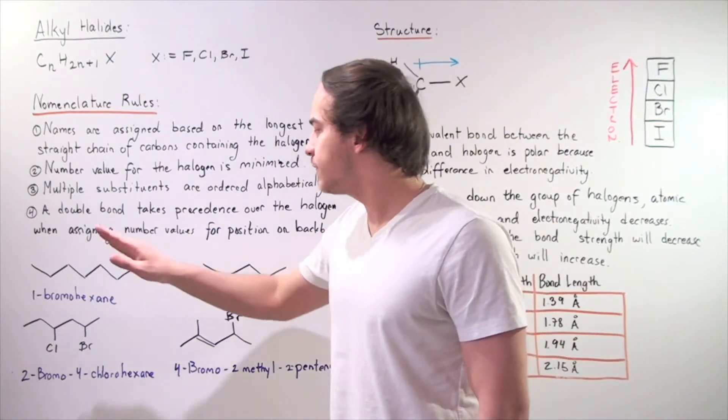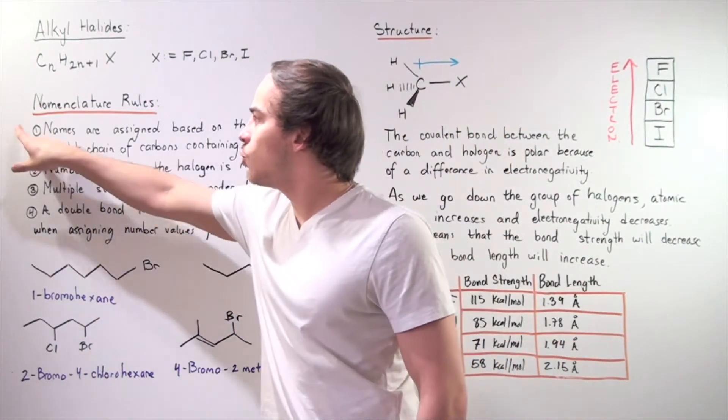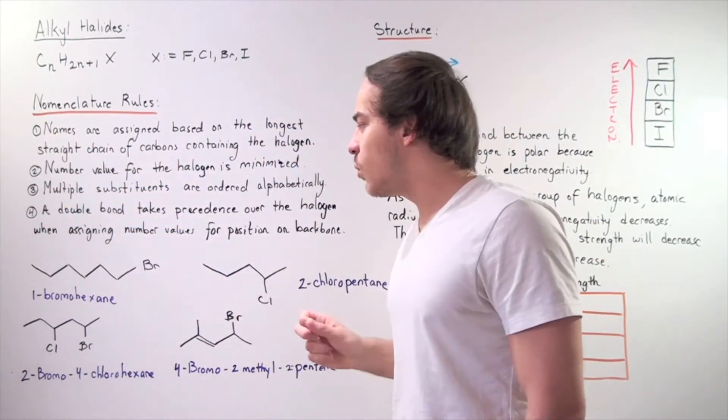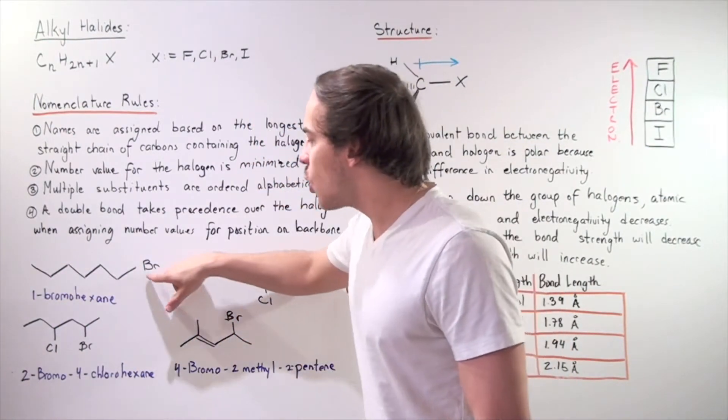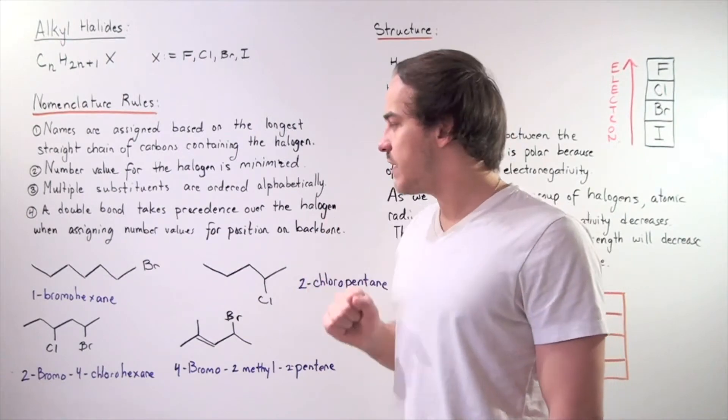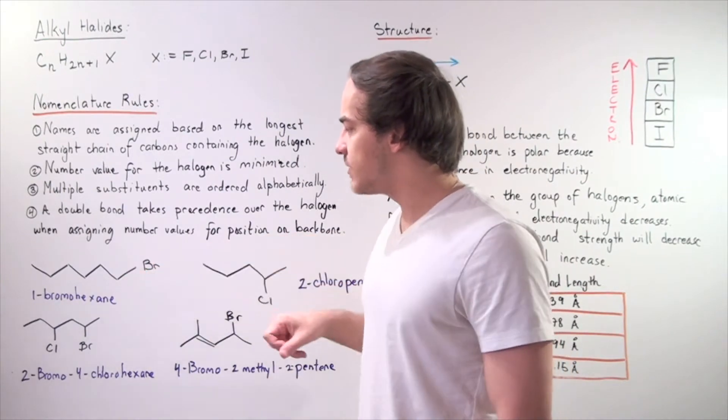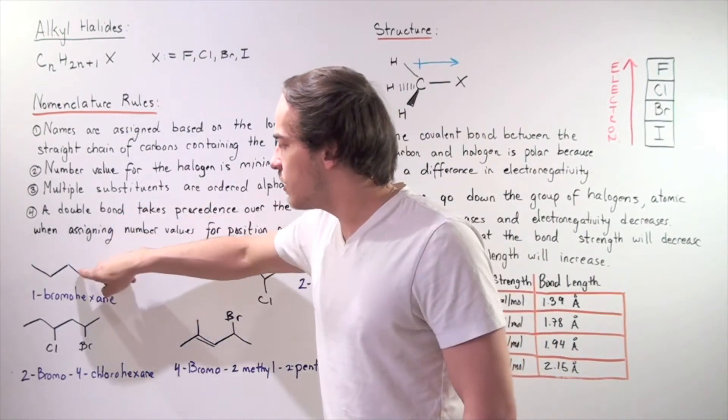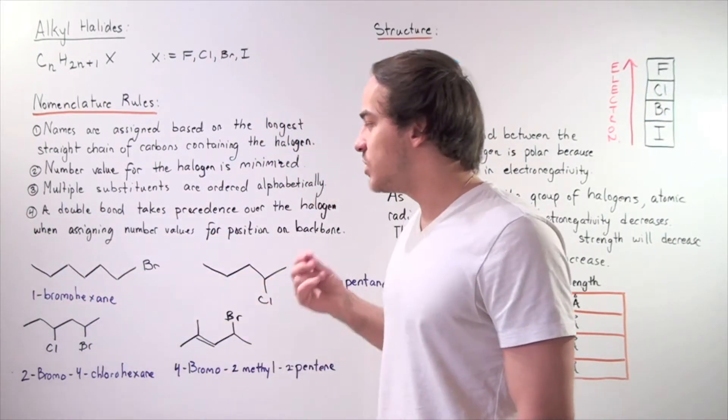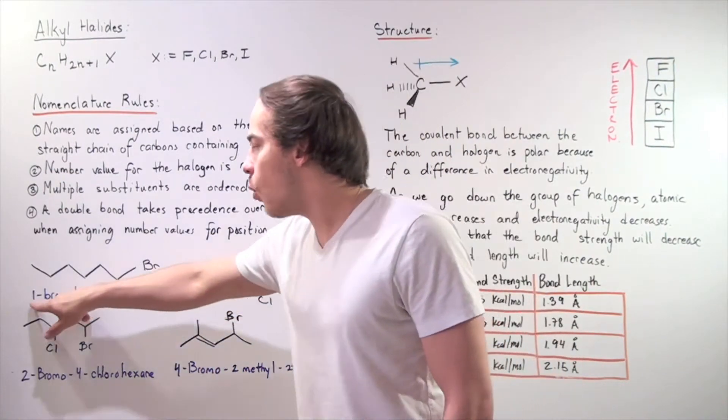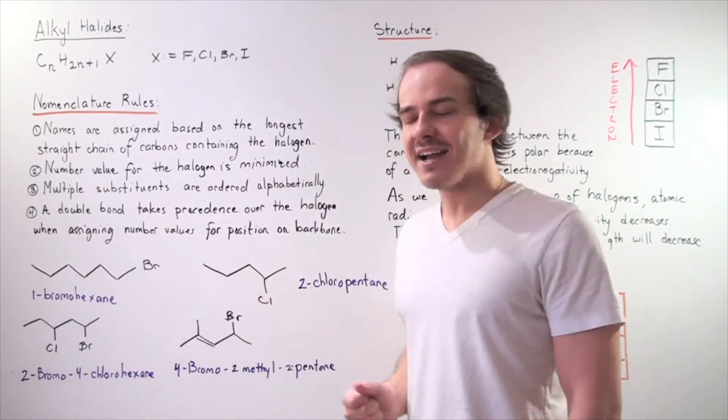Let's look at the following four examples. In example number one, we're essentially using rules one and two. We want to find the longest possible carbon backbone such that our bromine has the lowest possible position value. Instead of starting from this end, we must start counting from this end. One carbon, two, three, four, five, six carbons. That means we have a hexane because we don't have any double or triple bonds. One bromo means we have the bromine on the first position. So one bromohexane.